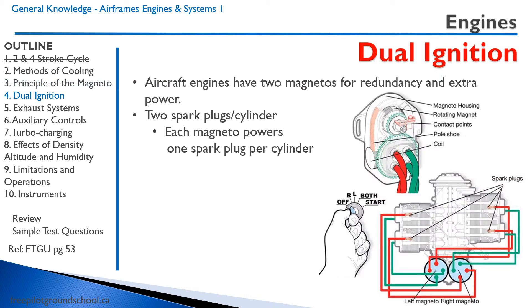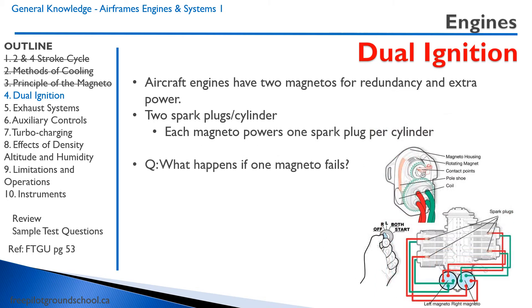Let's talk about dual ignition. Aircraft engines have two magnetos — this is done for redundancy and extra power. There are two spark plugs per cylinder, and each magneto powers one spark plug per cylinder. So if one magneto fails — say we lose the left magneto — we lose one spark plug per cylinder, but the other spark plug on each cylinder is still working. What will happen is just a slight reduction in engine power.